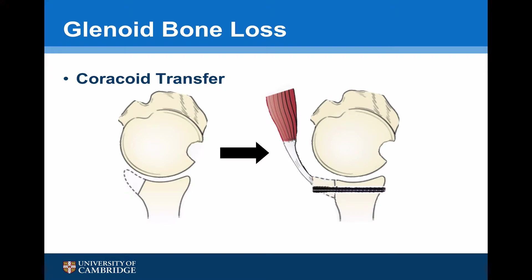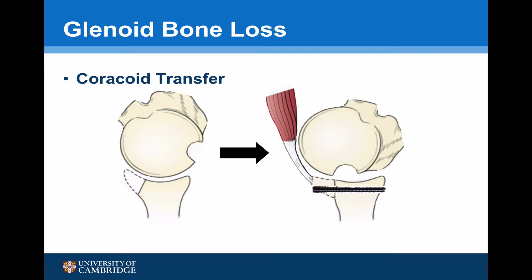Another commonly performed but more technically demanding procedure is a coracoid transfer. This involves undertaking an osteotomy of the tip of the coracoid and then attaching this with the conjoint tendon to the front of the glenoid. This has the additional benefit of not only increasing the arc of rotation but also the conjoint tendon working as a dynamic sling.